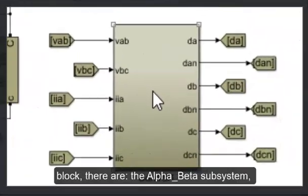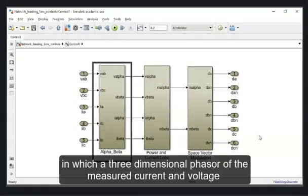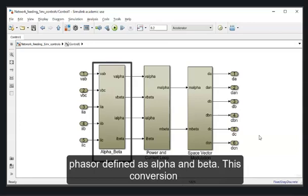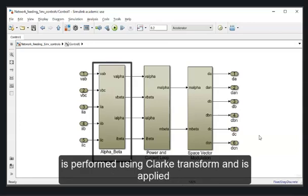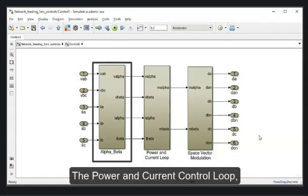Now into the control block. There is the alpha-beta subsystem, in which a three-dimensional phasor of the measured current and voltage units are converted into a two-dimensional orthogonal phasor defined as alpha and beta. This conversion is performed using Clark transform, and it is applied to simplify the analysis and control of the three-phase converter.